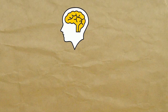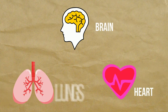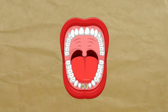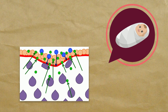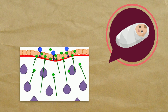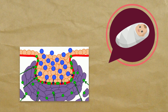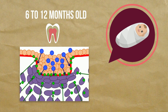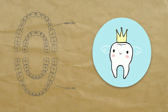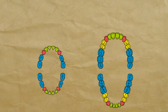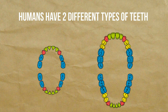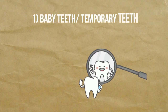Unlike some of your body's organs such as the brain, heart, and lungs, your teeth were never prepared to function from the day you were born. Although teeth develop before a baby is born, they are not visible even after birth until a baby is about 6 to 12 months old, when the first tooth breaks through and gradually more teeth begin to appear.